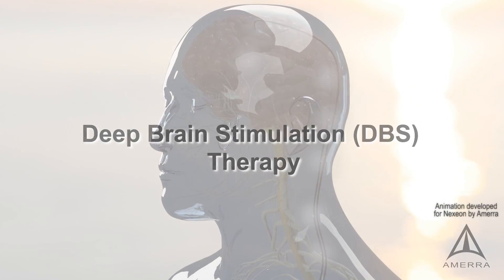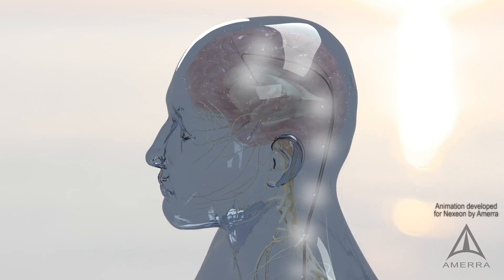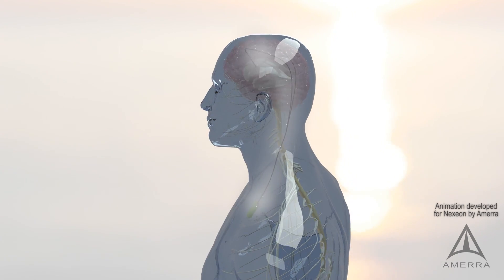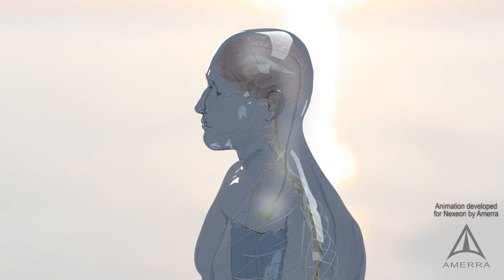DBS therapy utilizes a small device similar to a pacemaker with two thin wires called leads, which are implanted within the brain and are used to block messages that cause symptoms associated with Parkinson's.